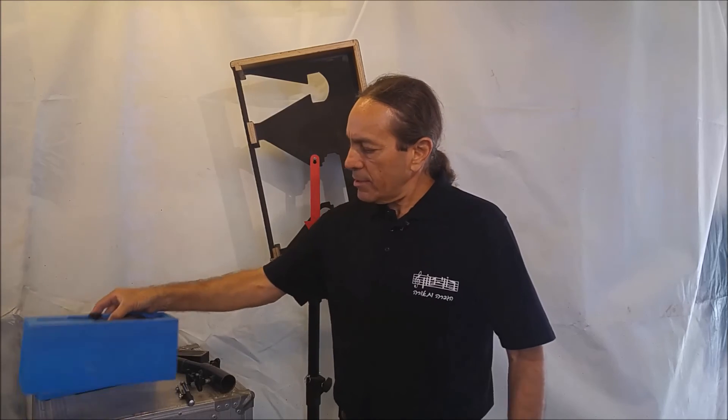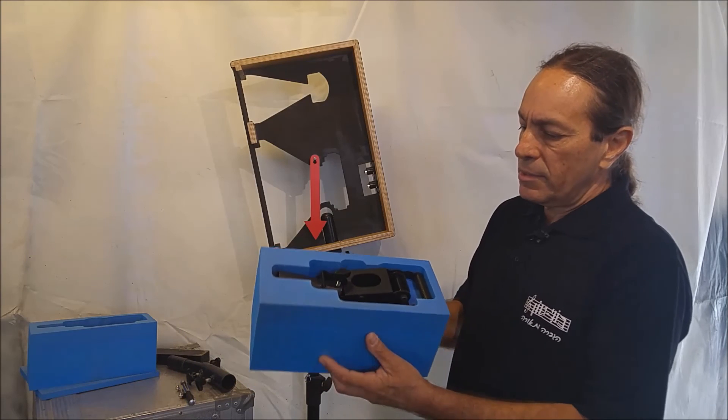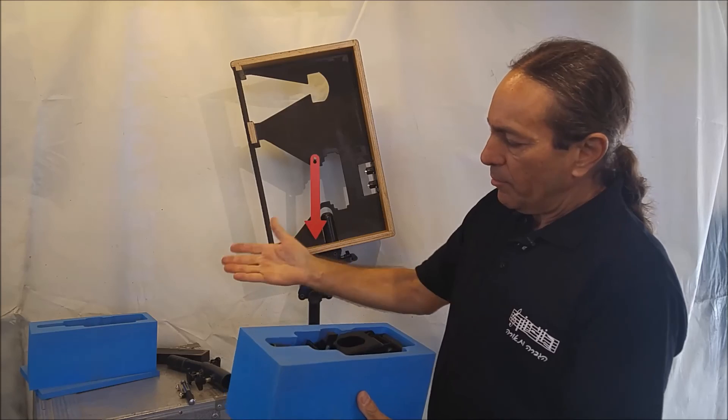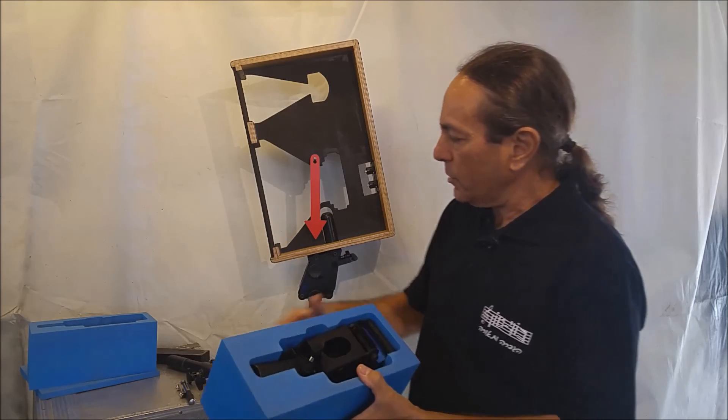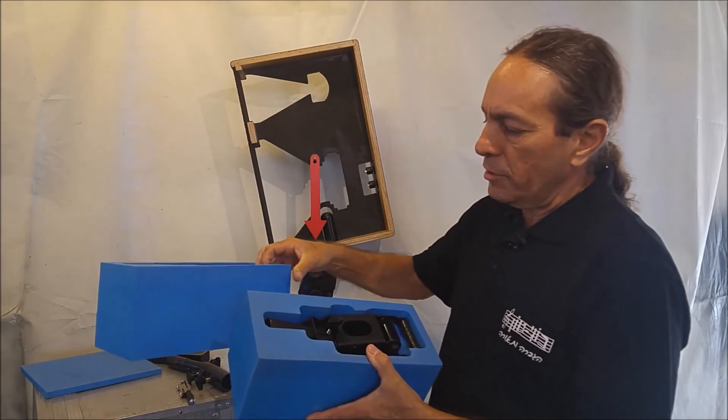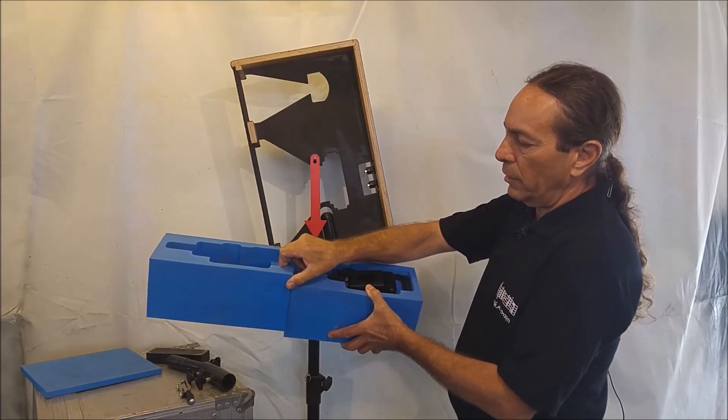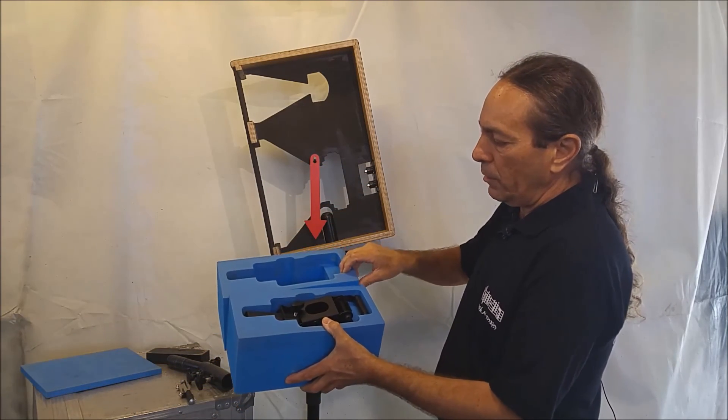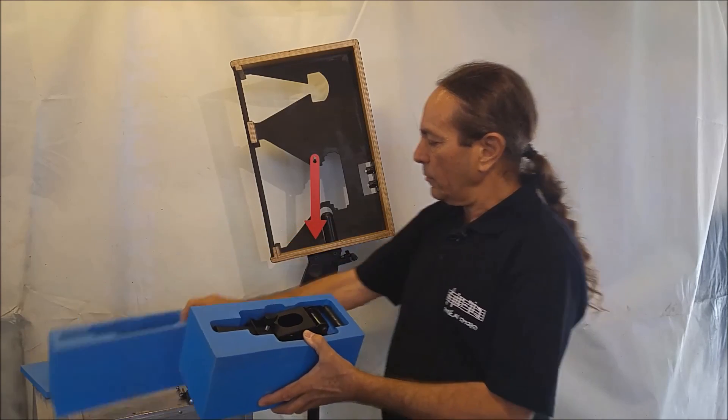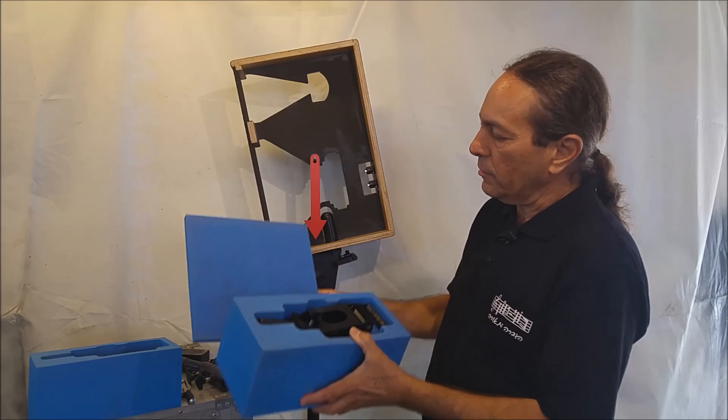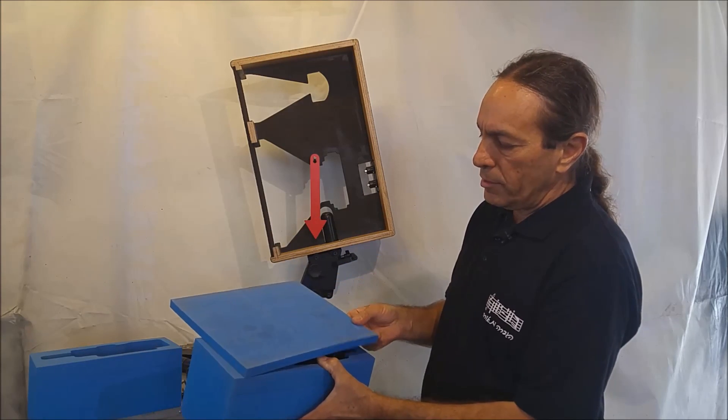The tilters are supplied inside these foam inserts, and they are separated for each tilter, so they can be positioned in your road case in any orientation you like. There's also a top cover that can be split in the middle to cover both inserts.